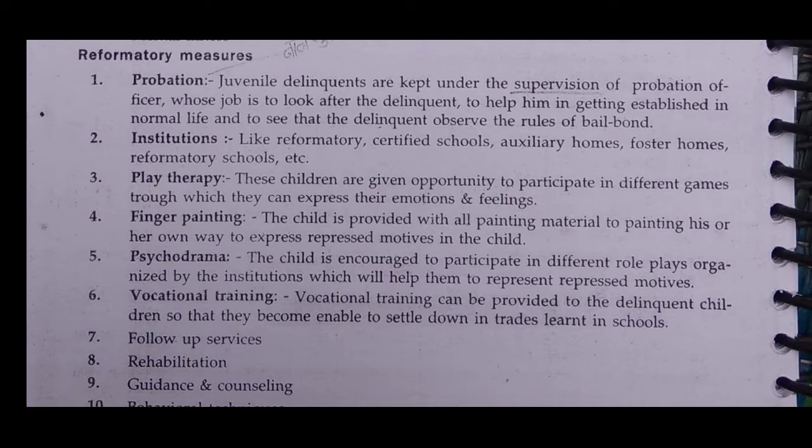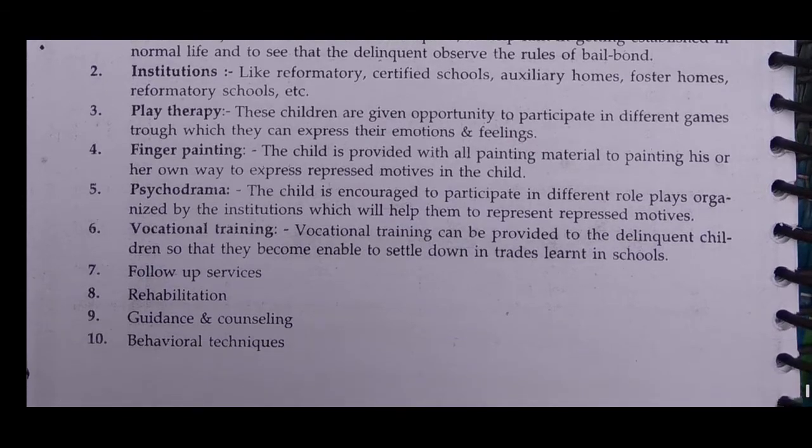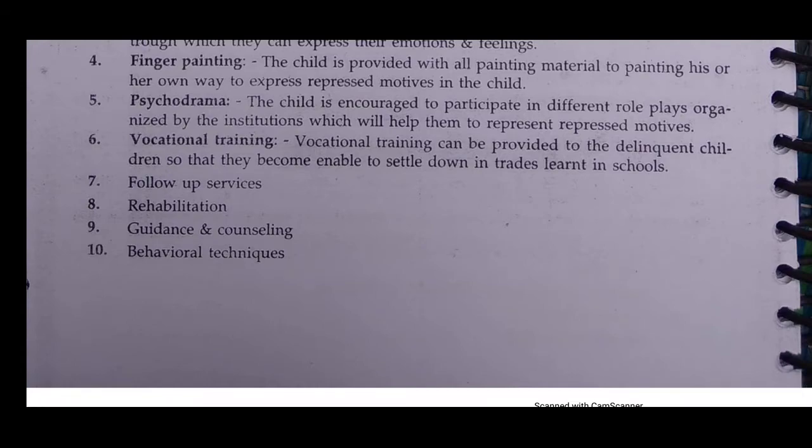Then there are institutions like reformatories, certified schools, auxiliary homes, and foster homes — these are all institutions where the child can be kept. The next measure is play therapy: these children are given the opportunity to participate in different games through which they can express their emotions and feelings. If a child has some problem, through play therapy the therapist helps them express their emotions through activities. Then there is finger painting — the child is provided with painting materials to paint in their own way to express repressed motives.